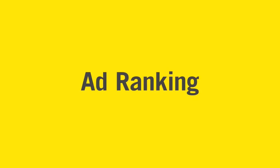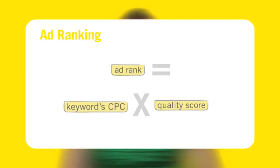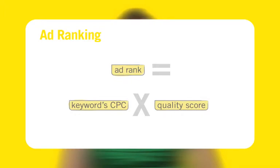Ad ranking. Keyword targeted ads are positioned based on a rank number that Google calculates every time a search is performed. An ad's rank number is determined by multiplying the keyword's CPC bid by the quality score. The higher your rank number, the higher the position of your ad on the page.